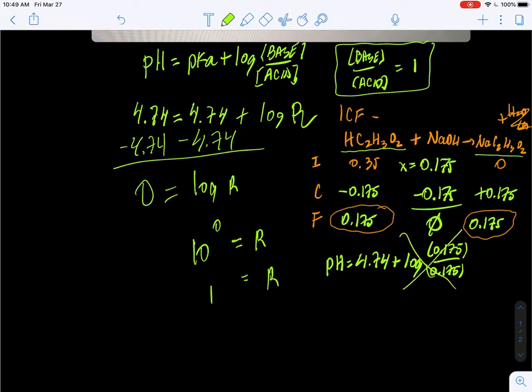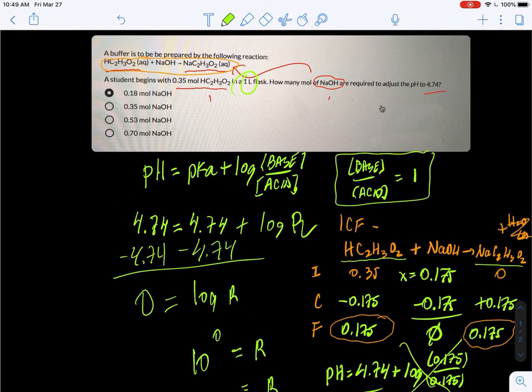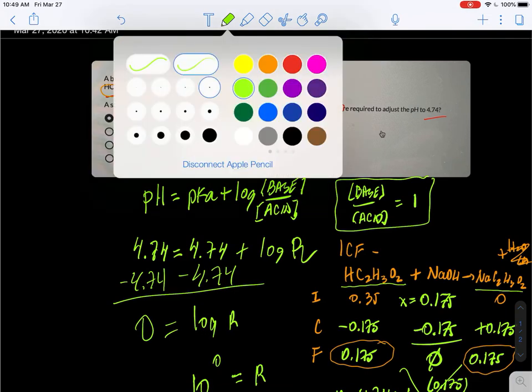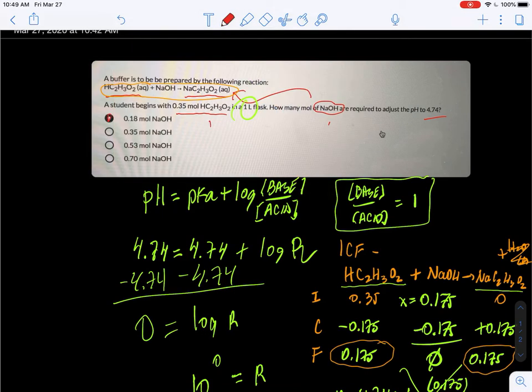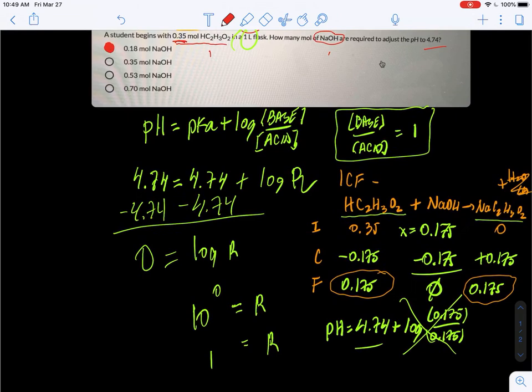The ratio now is going to be 0.175 over 0.175, and this is going to be equal to log of one, which is zero, and the pH is going to be 4.74. Let's see what answer is possible. The answer is already selected here. The correct choice is choice A, 0.18 when you round it to two sig figs. There's two sig figs for the starting moles.